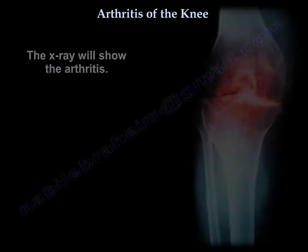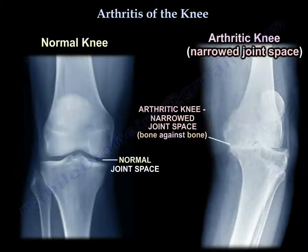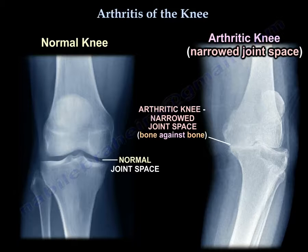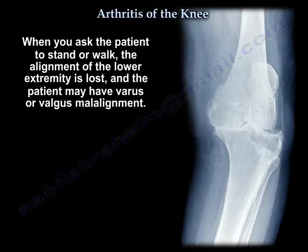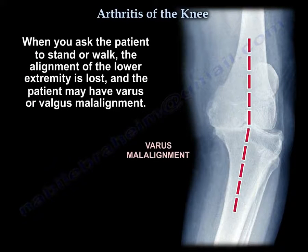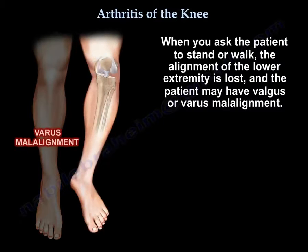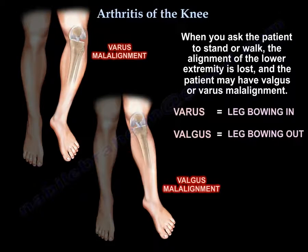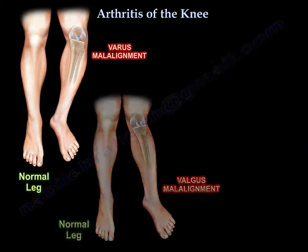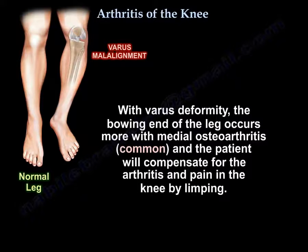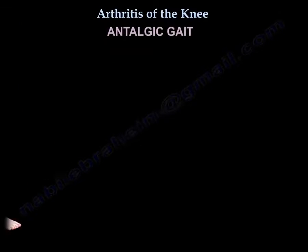There will be a lot of swelling and the knee will become unstable. X-rays will show the arthritis — here is a normal knee showing normal joint space, and here is a knee with severe arthritis and bone rubbing against bone. When the patient stands or walks, the alignment of the lower extremity is lost; the patient may have varus or valgus. Varus means the leg is bowing in; valgus means the leg is bowing out. Varus deformity occurs more with medial osteoarthritis, which is most common.